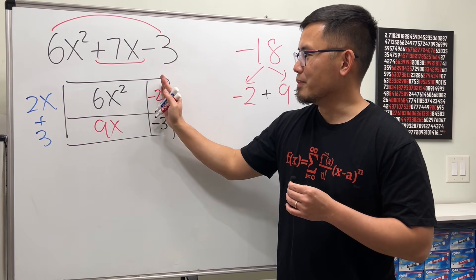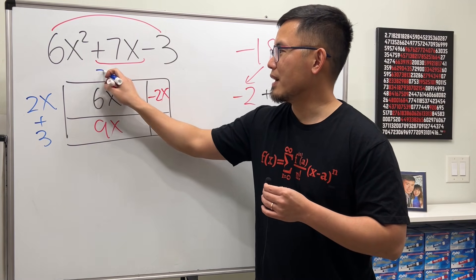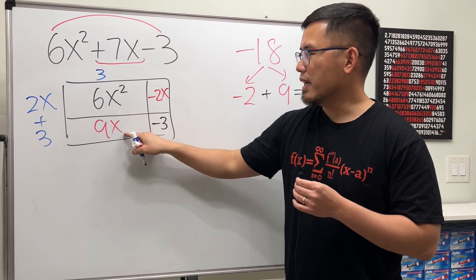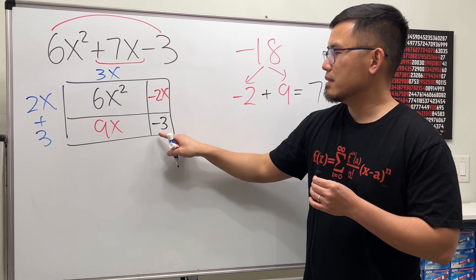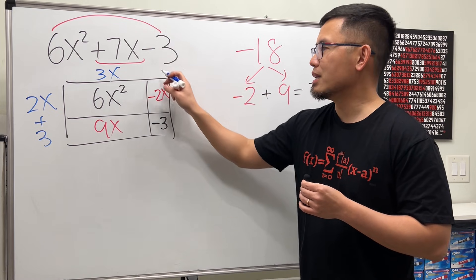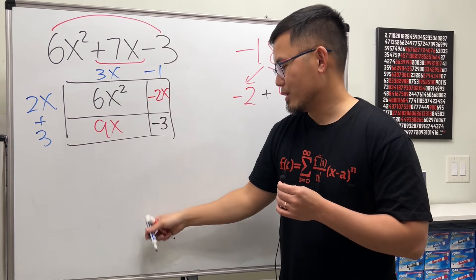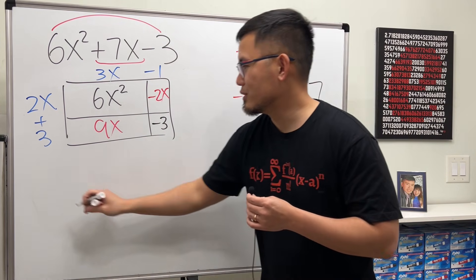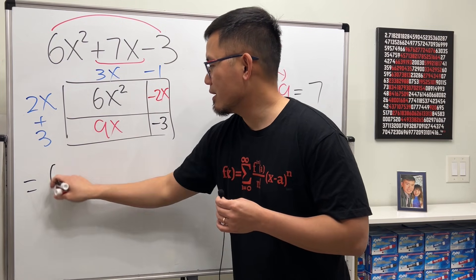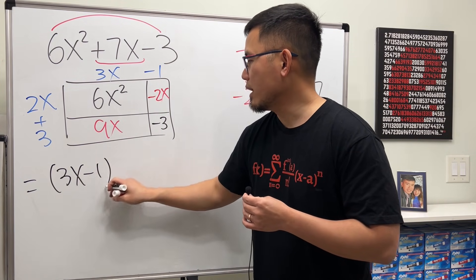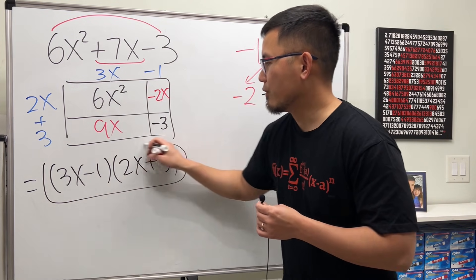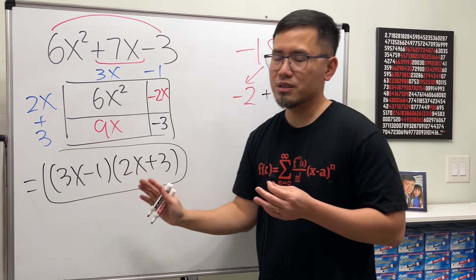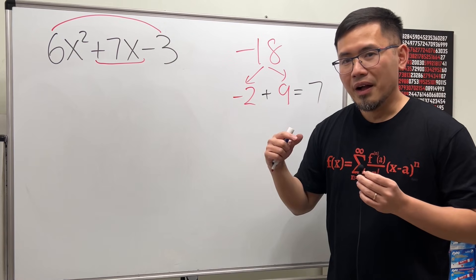Now, do the first column. 6 and 9, we can factor out a 3. x squared and x, we can factor out an x. Here, minus 2x minus 3, we can factor out a minus 1. So, the answer is just this right here: 3x minus 1, and then the other one, 2x plus 3. Of course, if you switch the order of the factors, it doesn't matter.